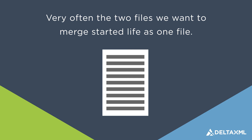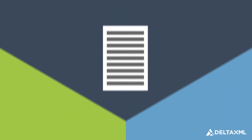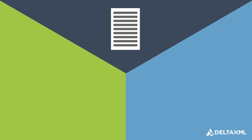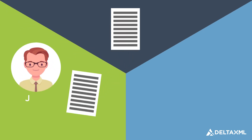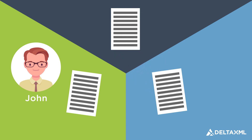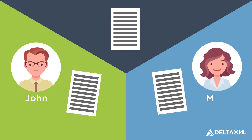Very often the two files we want to merge started life as one file and two different people or two different processes have made changes. This gives us a problem when we do a two-way merge. Let's say one copy of our address list has been changed by John and another copy changed by Mary.